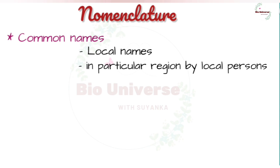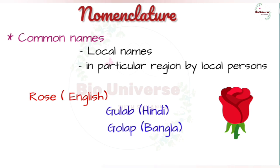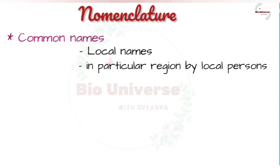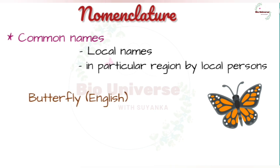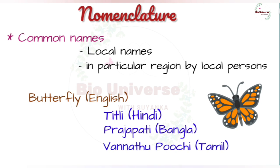For example, Rose in English is Gulab in Hindi, Gulab in Bangla, and Rosapo in Tamil. Similarly, Butterfly in English is Titli in Hindi, Prajapati in Bangla, and Vanathu Pochu in Tamil.